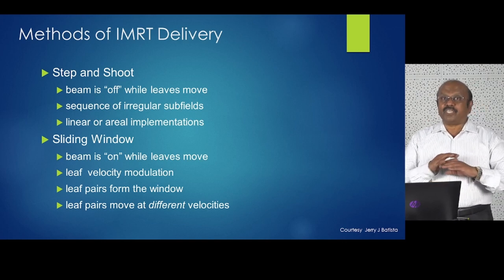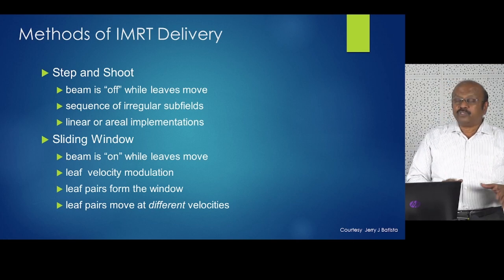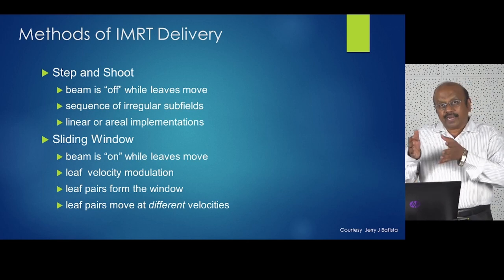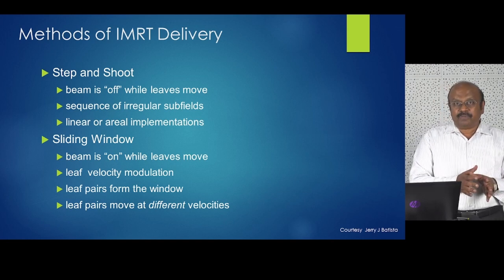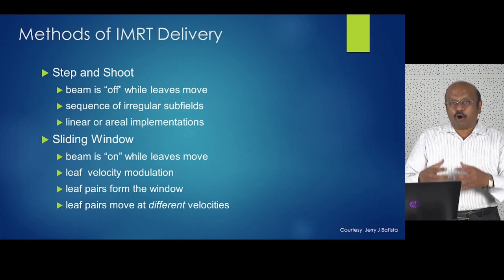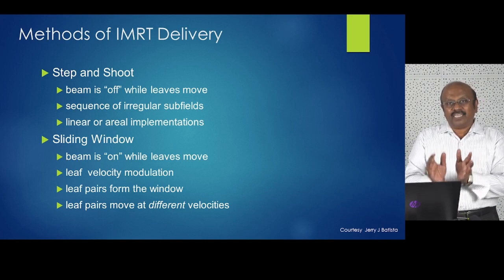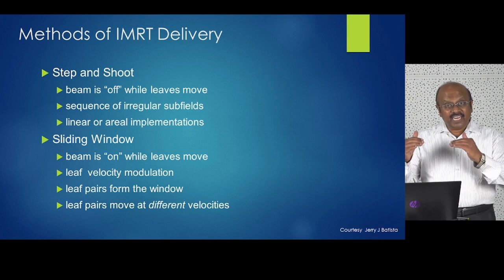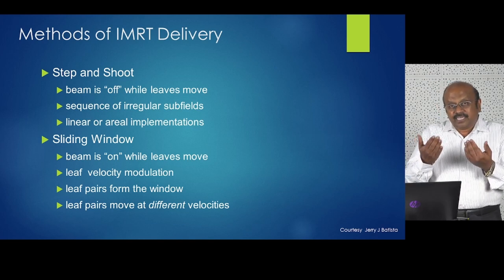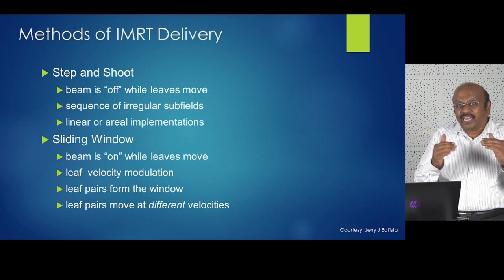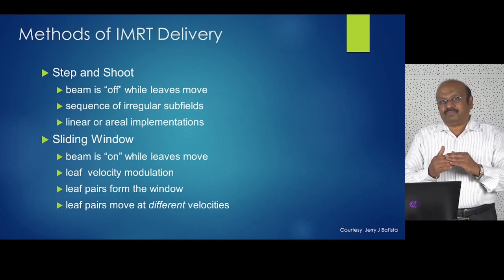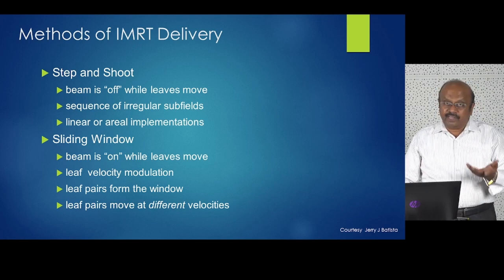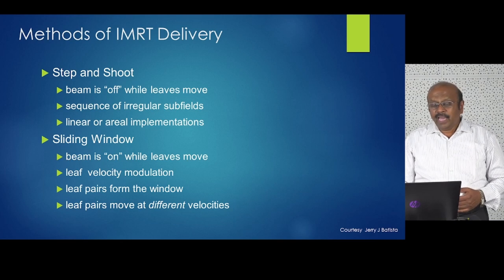In step-and-shoot, the beam is off when the leaves move. The leaves form a shape, the beam is on and irradiates, then the beam stops, leaves form another shape, and the beam is on again. The segments or shapes are formed while there is no beam; when completely formed, the radiation beam turns on. In sliding window, when the leaves move the radiation beam is on. The fluence map is obtained by varying the velocity and position of the leaves, including which leaf opens and closes.